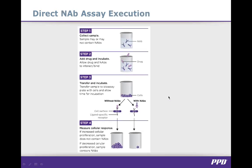This slide illustrates the main execution steps of a direct NAB assay, using proliferation as the cellular response. Step one is sample collection — at this time it is not known whether or not the sample contains NABs. In step two, a specific drug concentration determined during the development phase is added to the sample and incubated to allow any NABs to bind to the drug product. In step three, the sample is transferred to a bioassay plate, allowed to interact with the cells, and further incubated. In step four, the cellular response is measured. Increased cellular proliferation indicates the drug product was able to bind to the ligand-specific receptor, so no NABs were present. When NABs are present, they bind to the drug product, preventing it from binding to the cells and producing a response.